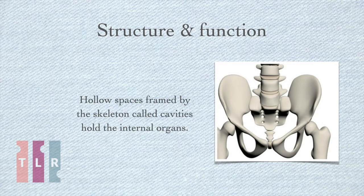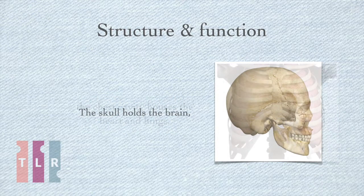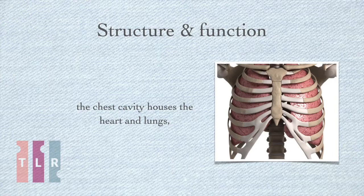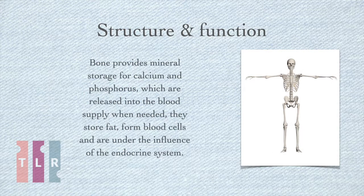Hollow spaces framed by the skeleton, called cavities, hold the internal organs. The skull holds the brain, the chest cavity holds the heart and lungs, and the abdominal cavity encases the organs of the digestive, urinary and internal reproductive systems. Bone also provides mineral storage for calcium and phosphorus, which are released into the blood supply when needed. Bones store fat, form blood cells and are under the influence of the endocrine system.